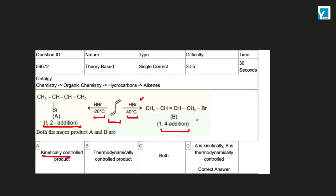And the product at higher temperature will be the thermodynamically controlled product. So A is the kinetically controlled product and B is the thermodynamically controlled product. Therefore, D will be the correct option.